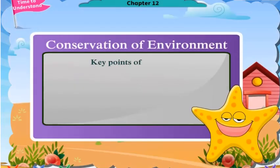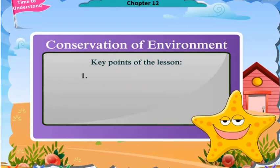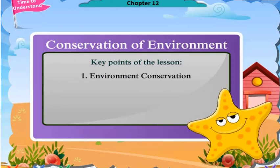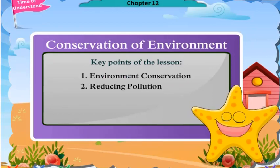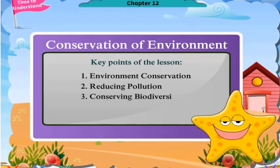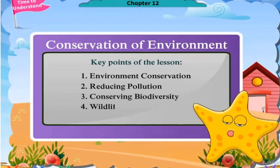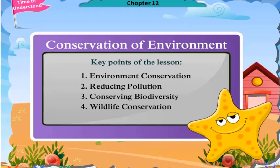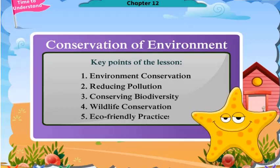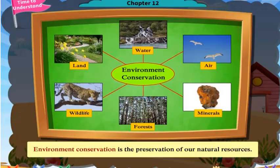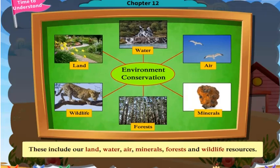Key Points of the Lesson: Environment Conservation, Reducing Pollution, Conserving Biodiversity, Wildlife Conservation, and Eco-Friendly Practices. Environment Conservation is the preservation of our natural resources. These include our land, water, air, minerals, forests, and wildlife resources.